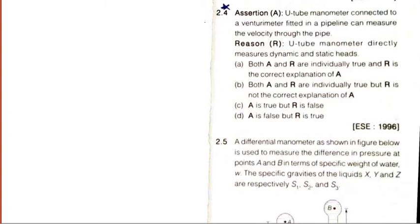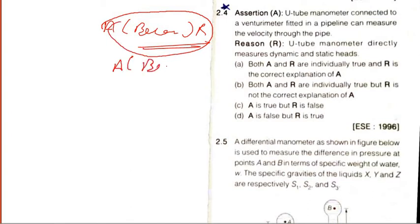Question number 4, assertion reasoning. I have told you, assertion because reason, then the answer is correct. Assertion: A manometer connected to a venturimeter fitted in a pipeline can measure velocity. Yes, if it can measure discharge, then definitely it can measure velocity.